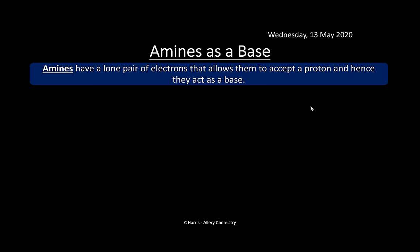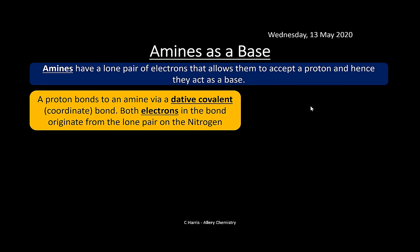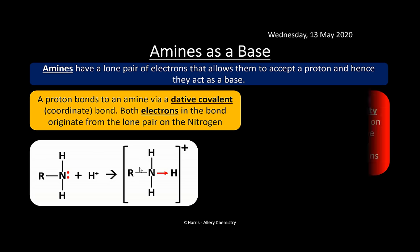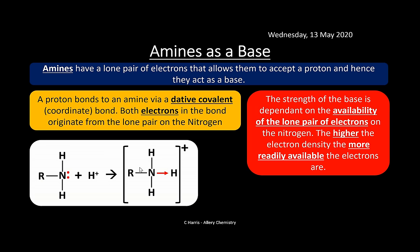Amines have a lone pair of electrons on the nitrogen, which allows them to accept a proton and hence act as a base. A proton bonds to an amine via a dative covalent (coordinate) bond, where both electrons in the bond originate from the lone pair on the nitrogen, giving the nitrogen an overall positive charge. The strength of the base depends on the availability of the lone pair — the higher the electron density on the nitrogen, the stronger the base.